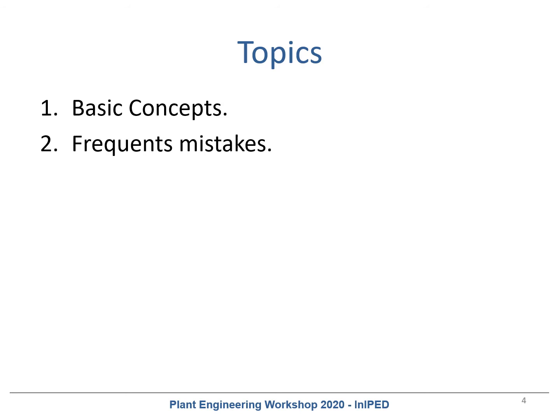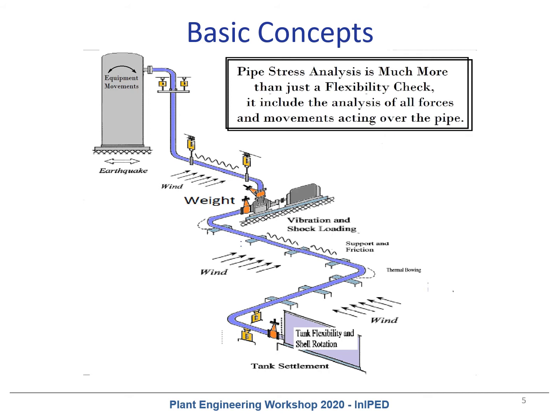In this seminar we will see basic concepts and frequent mistakes. PI Stress Analysis is much more than just a flexibility check. We need to check the effect of all weight over the pipe, equipment movements, thermal expansion, equipment settlements, earthquake, wind, pipe friction, shock loading, vibration, and all phenomena that affect our pipe.